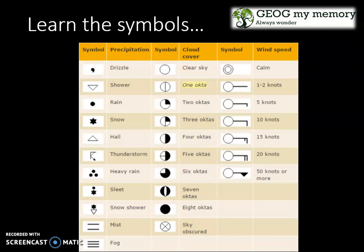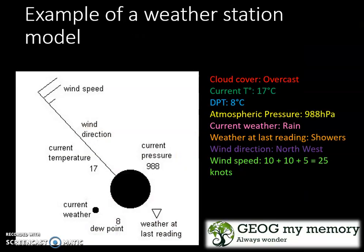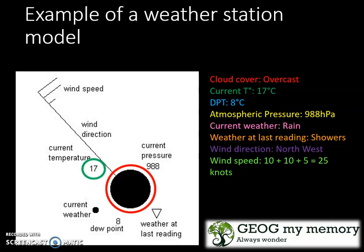Let's look at an example. This example is looking at your weather station model found on the internet. Here you can see that the cloud cover shown in this example is overcast. The current temperature is 17 degrees Celsius. Your dew point temperature is 8 degrees Celsius. Your atmospheric pressure is 988 hectopascals.